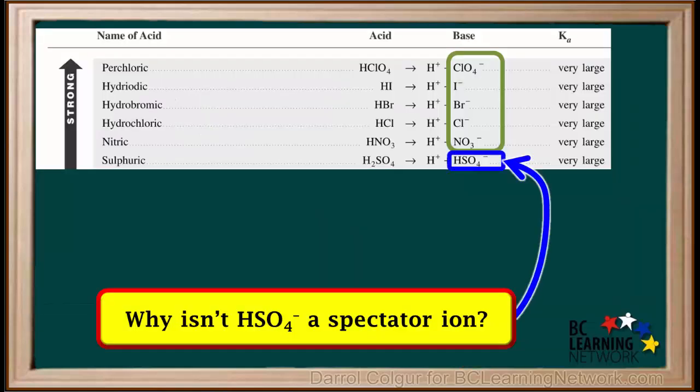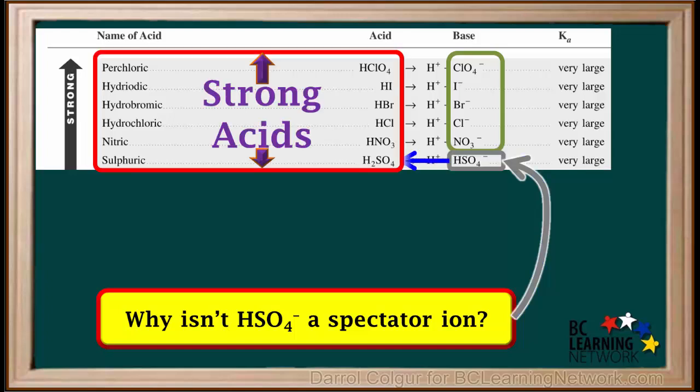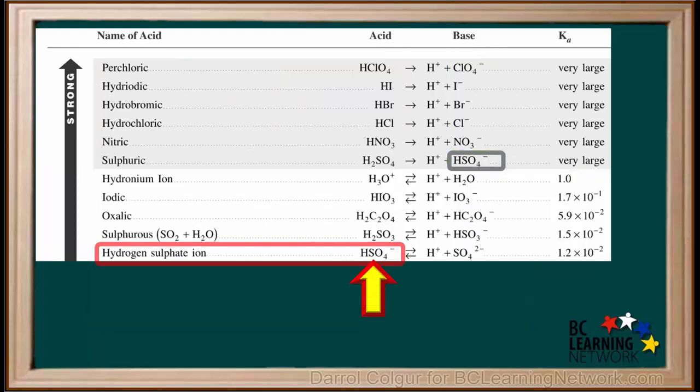At this point, you may ask, why isn't HClO4- a spectator ion? After all, its conjugate acid HClO4 is a strong acid. It's because HClO4- also appears in this location on the left side of the table. That means it can act as a weak acid. So it is not a spectator ion.